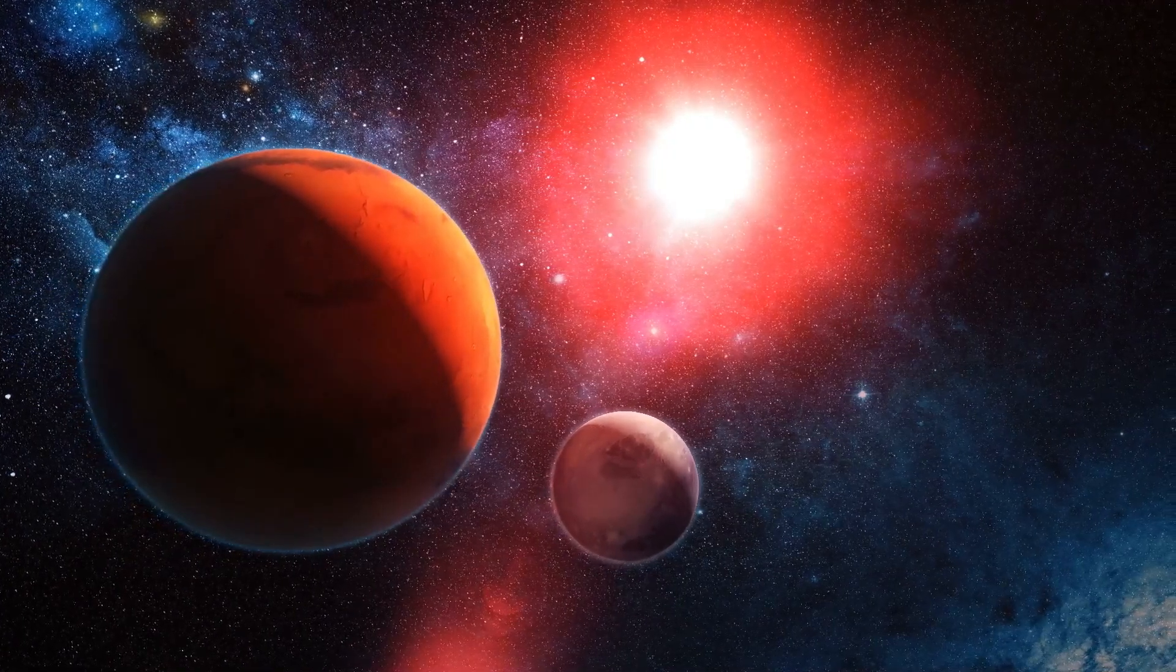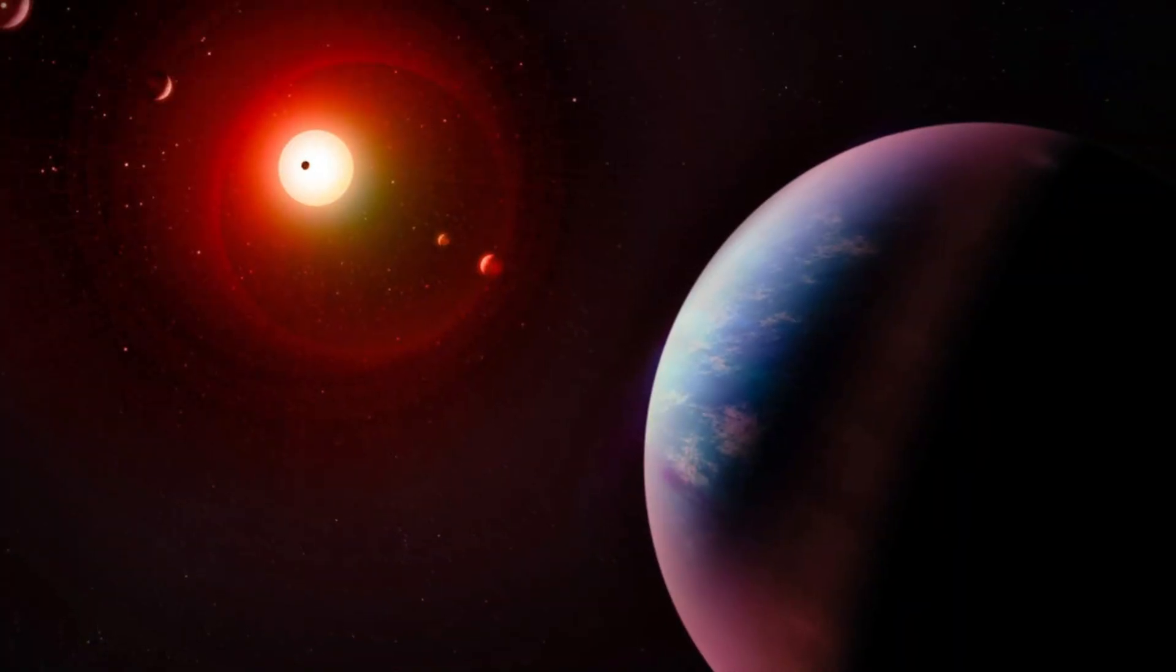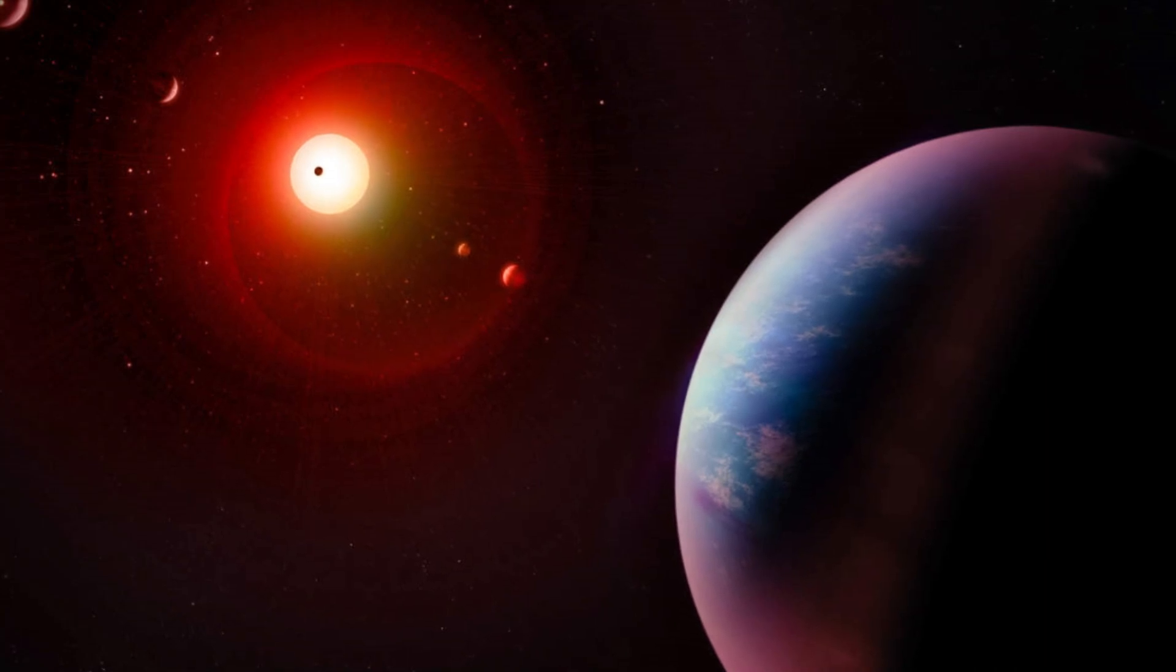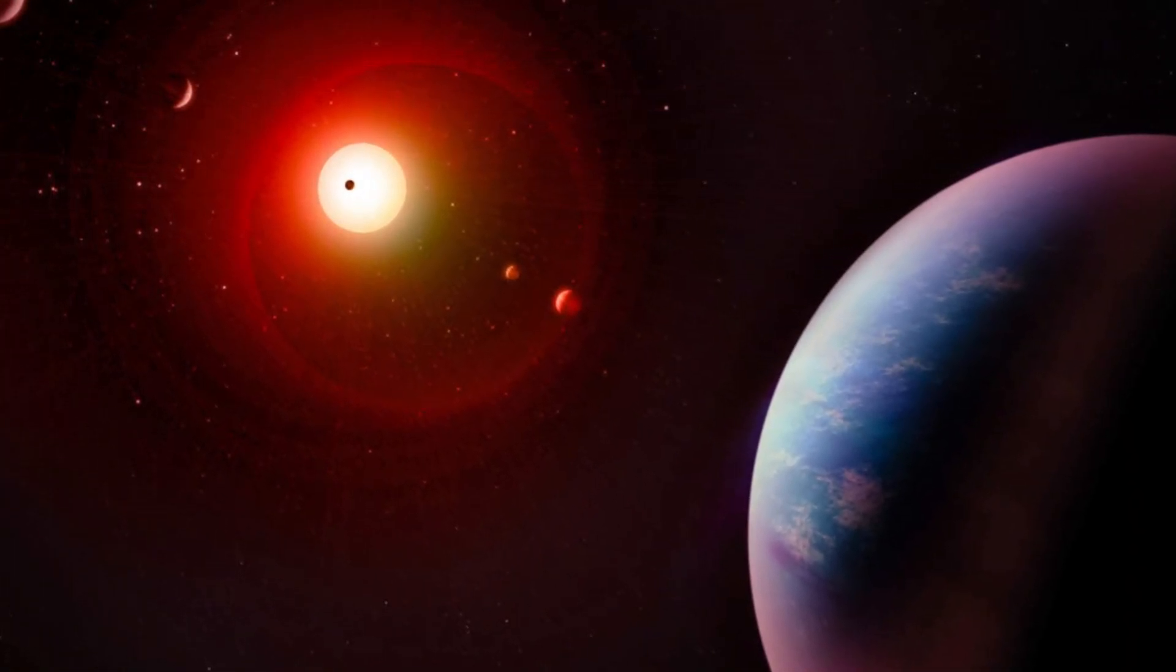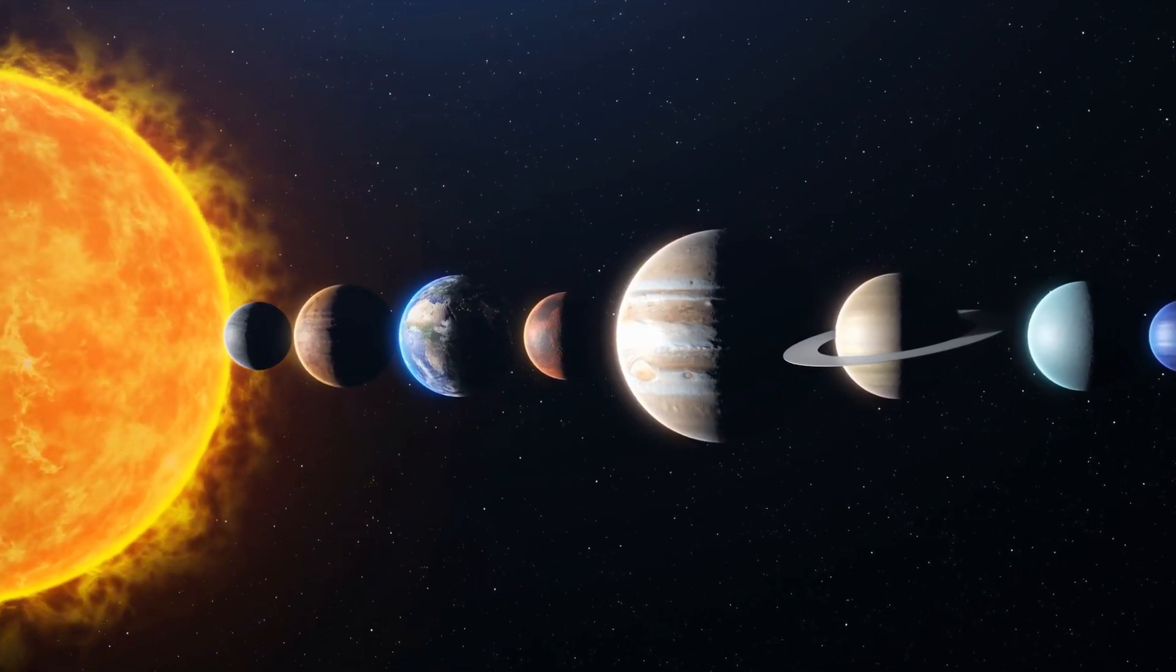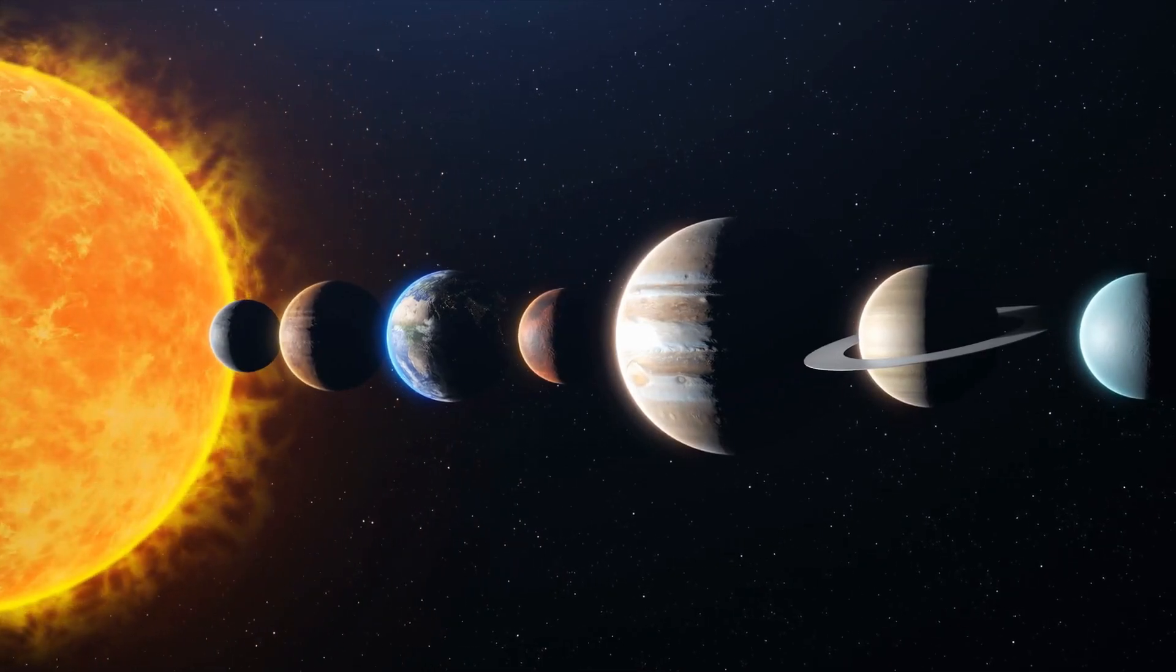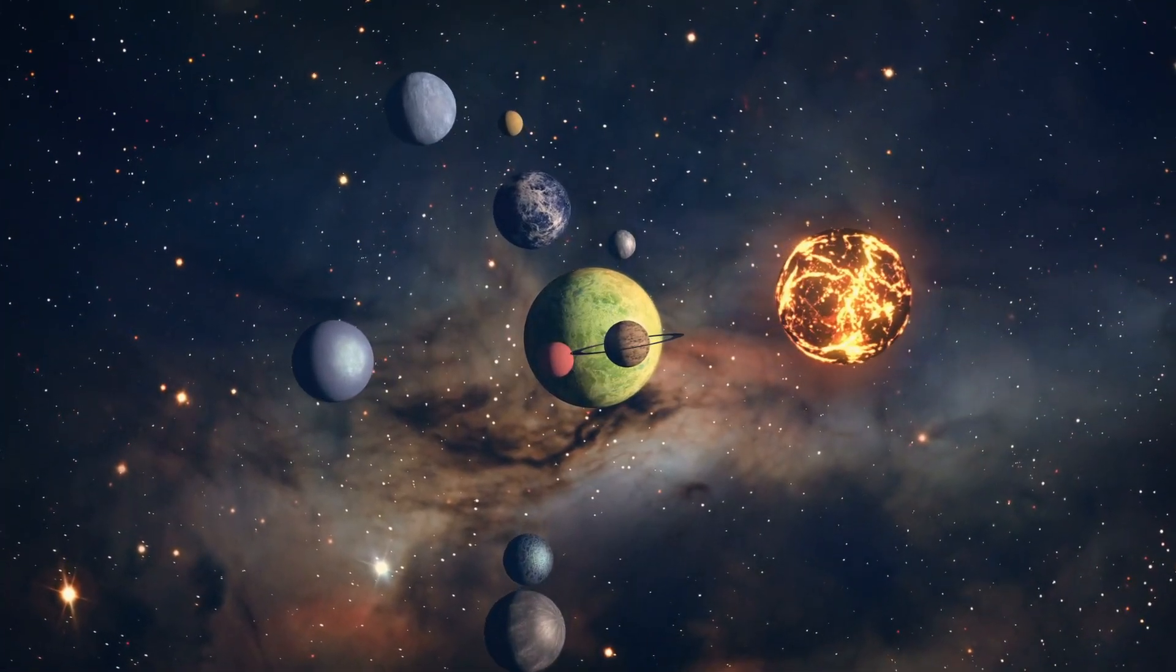That's why astronomers are calling this the first observed ruby world. As you can imagine, the implications of discovering a planet made of actual diamond and ruby are extraordinary. This revelation changes many of the established theories that astronomers had about planetary formation and the expected chemistry of worlds outside our solar system.